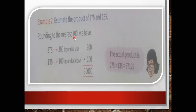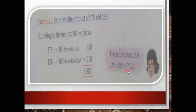Rounding to the nearest 100: 275 rounded up gives 300, and 135 rounded down gives 100. When you multiply 300 × 100, you get 30,000. The actual product of 275 × 135 is 37,125 — at least this estimate is reasonably close to the actual number.